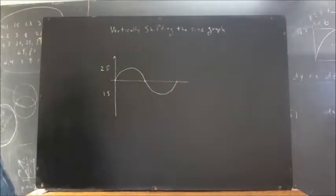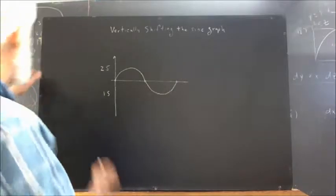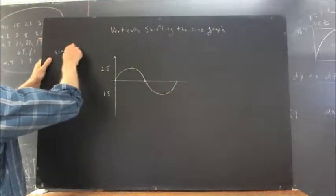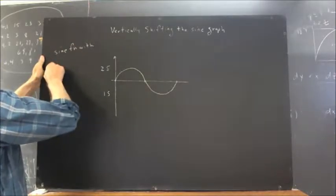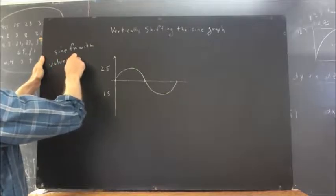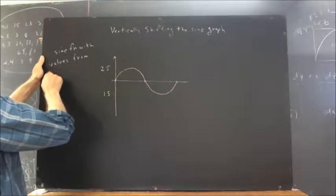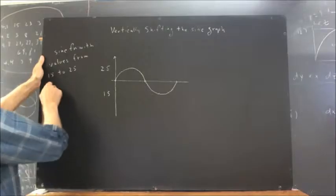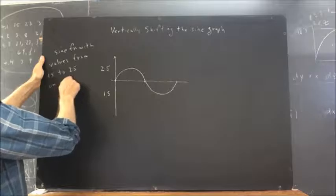Okay, so we've labeled the vertical axis according to the values between which we want the sine function to fluctuate. So we've got a sine function with values from 15 to 25 on one complete cycle.